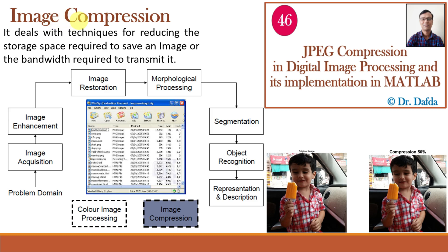The next step is image compression. Image compression is the process of reducing the size of an image file while preserving its visual quality by encoding and storing image data in a more efficient format, typically by removing redundant or unnecessary information. Common compression techniques include lossless methods such as run-length encoding and lossy methods such as JPEG. Image compression is vital for efficient storage, transmission, and sharing of images across applications from web content to medical imaging. This is our original image and we will compress it up to 90 percent and compare both images. Let us implement this in MATLAB.